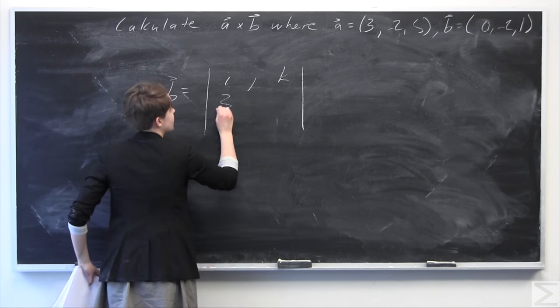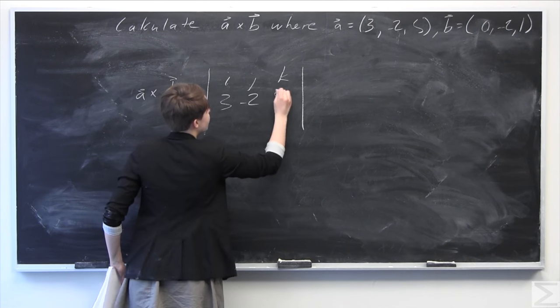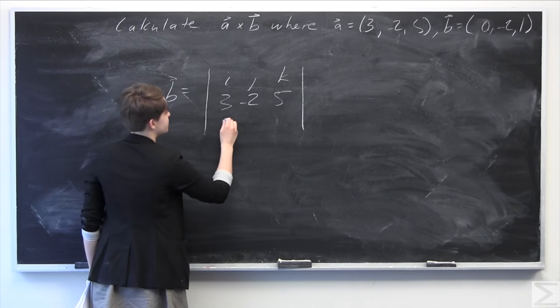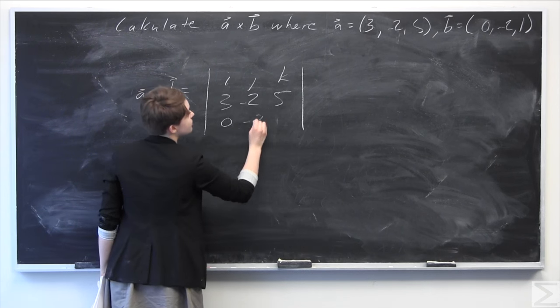Then we're going to write 3, -2, 5, just rewriting the vectors directly. That's A. And B is 0, -2, 1.